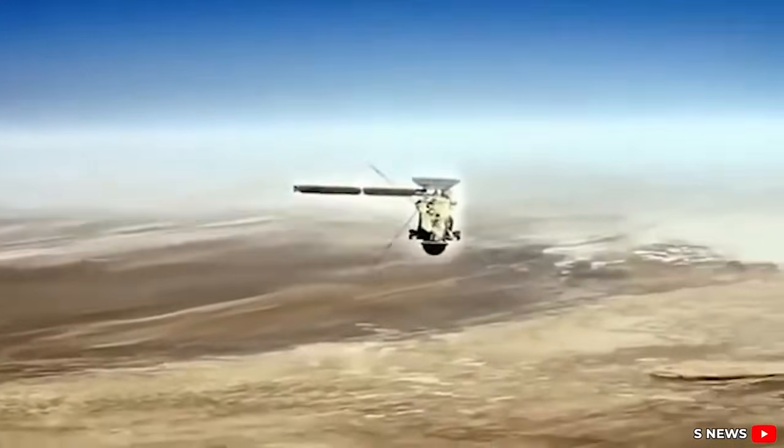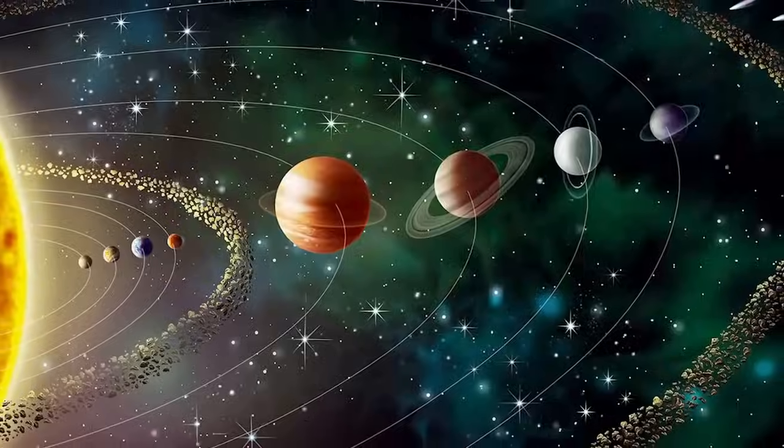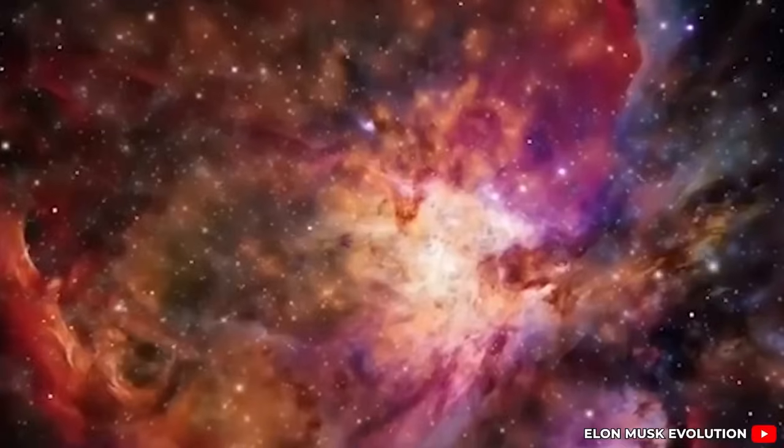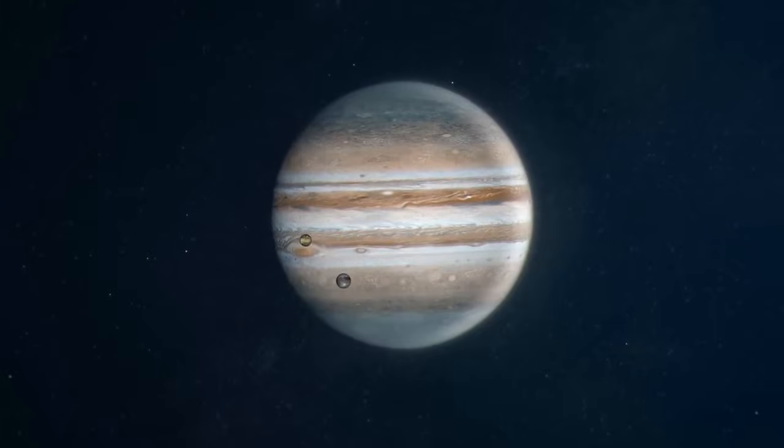In October 2024, Voyager 1 experienced a communication anomaly when it unexpectedly ceased sending data via its primary X-band transmitter, which operates at higher power and provides more detailed telemetry.